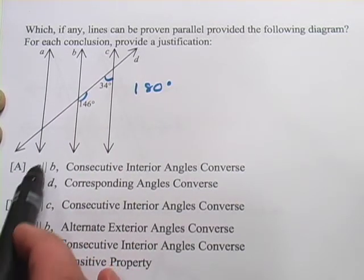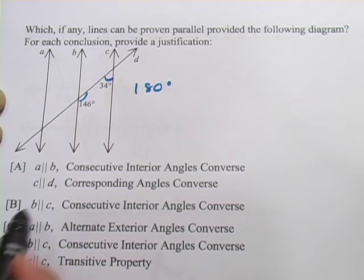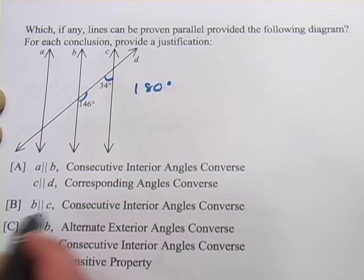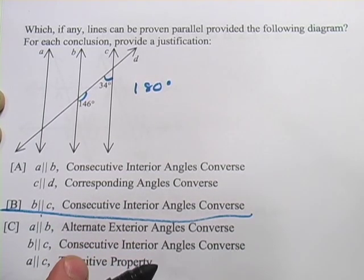So let's see if we can find one like that. We're looking for B and C. B and C, consecutive interior angles converse. There it is. And that is our answer.